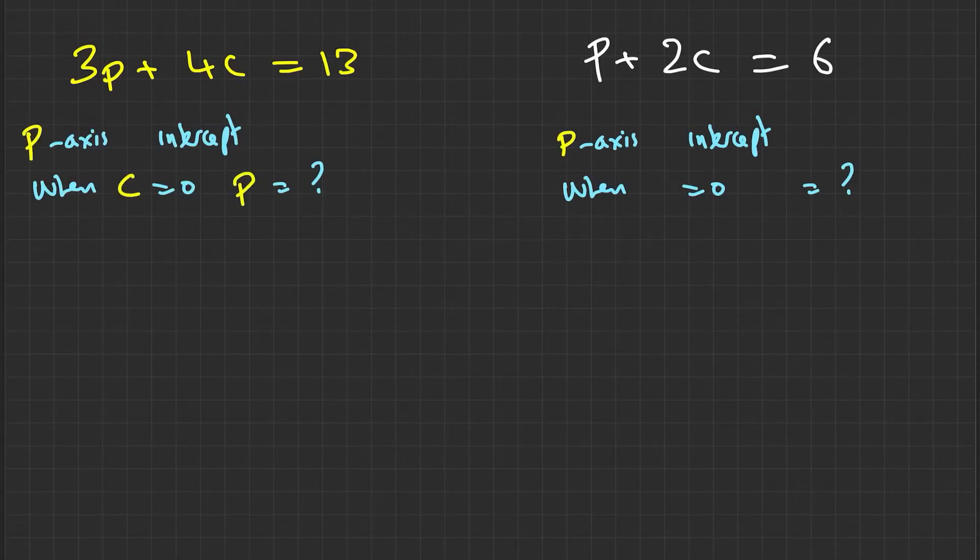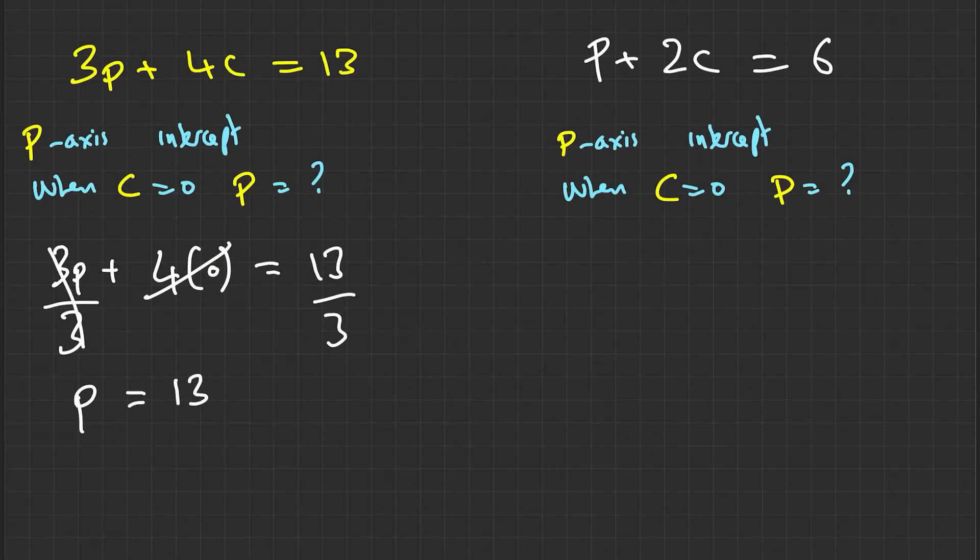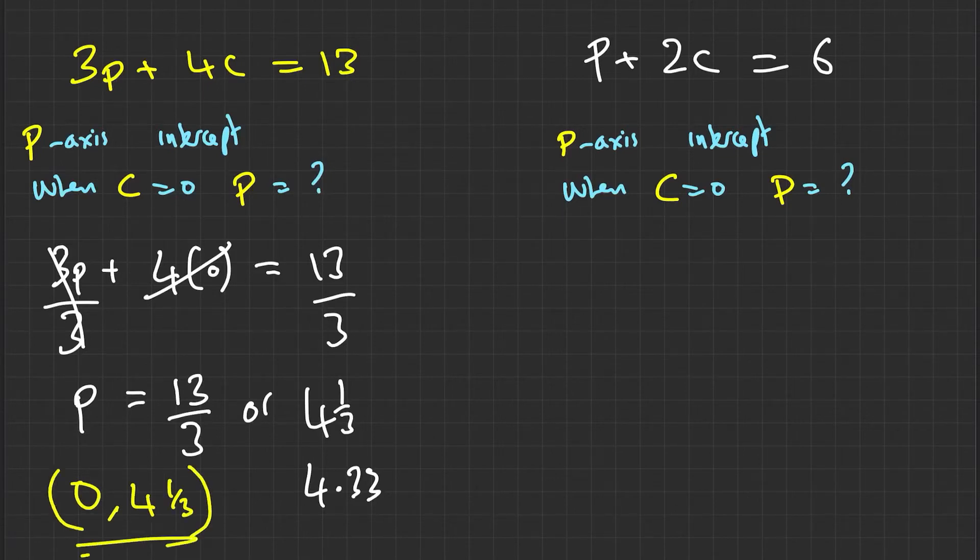So let's do that here. So when c is equal to 0, what is the value of p? So let's work this out then. If c was 0, so we've got 3p plus 4 times 0 is equal to 13. Remember, I'm just trying to work out the axis intercepts. 4 times 0 is 0, that cancels out. If I divide this by 3, divide this by 3, the 3 is going to cancel out on the left-hand side. I'm going to have p is equal to 13 over 3 or 4 and 1 third. Or 4.3333 recurring. So that's one set of coordinates that I have. I know when that c is equal to 0, or in other words x, when x is equal to 0, we have a value of 4 and 1 third. That's one point that we're going to plot.